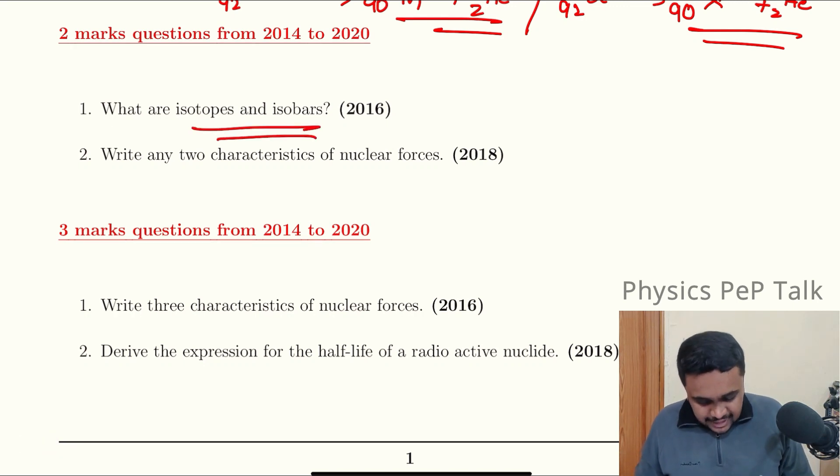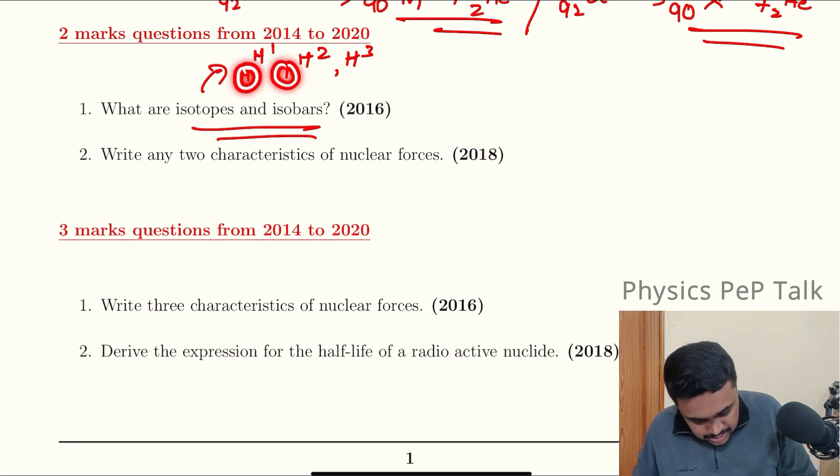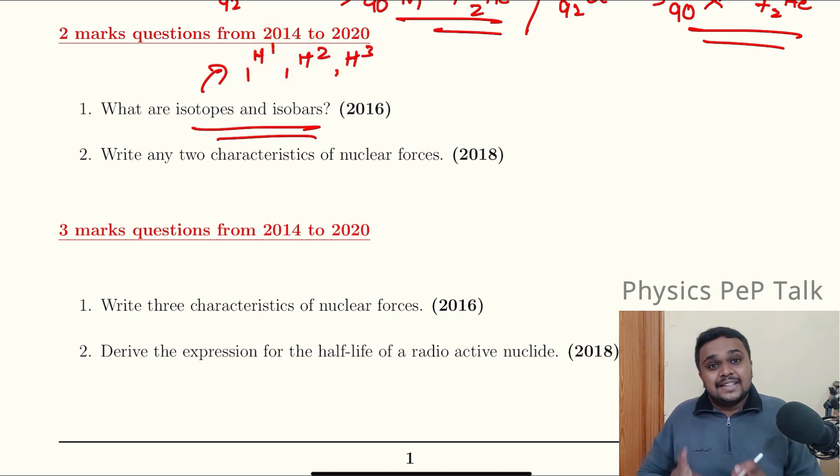Two marks question: What are isotopes and isobars? Isotopes are nuclei having same atomic number but different mass number. For example, hydrogen: 1H1, 1H2 deuterium, 1H3 tritium. These are examples for isotopes. This is atomic number, same, but mass number is different.